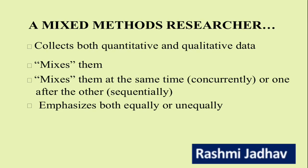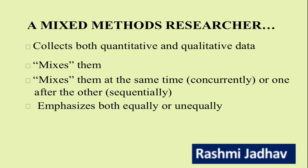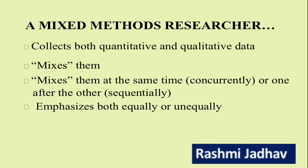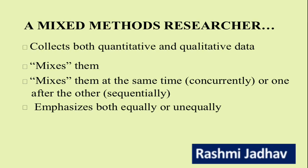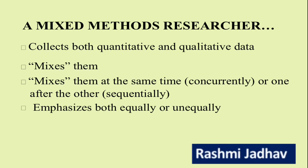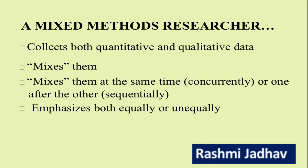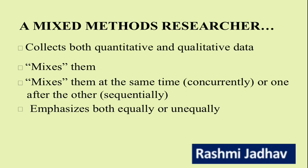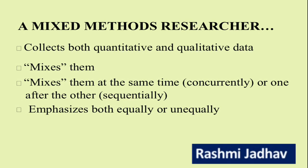Now we will see when we can conduct a mixed method research design, and in which situations. We use it when we have both quantitative and qualitative data, when one type of research is not enough to answer the question, when we want qualitative research to help explain quantitative findings, when we want to generalize findings to a large population, and when we want to provide alternative perspectives in a study.